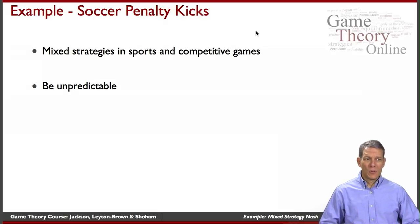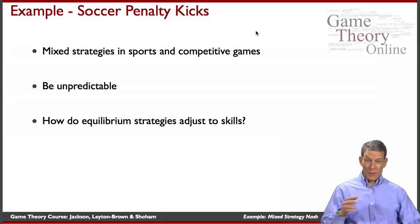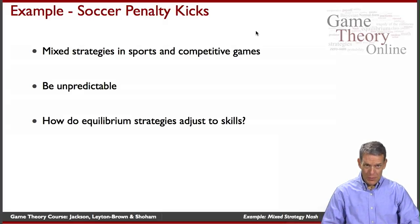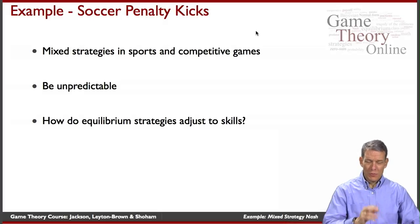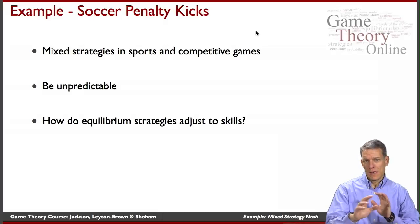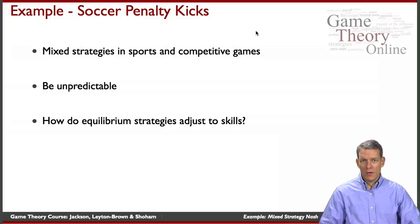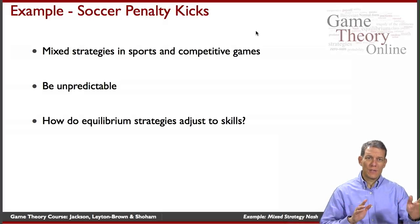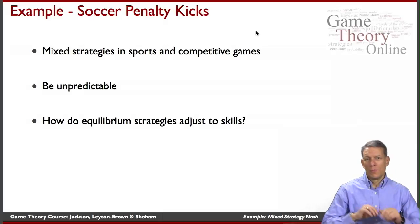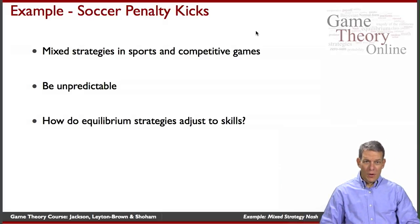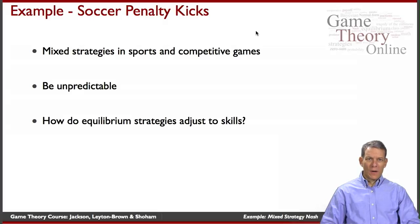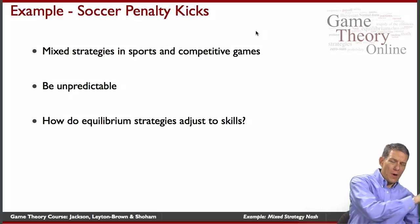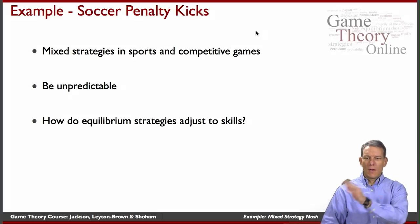By not knowing what the opposition is going to do, it makes it more difficult for you to pick an optimal strategy. In these games where one player wins and the other loses — in soccer penalty kicks specifically — the kicker tries to kick the ball into the goal, the goalie tries to deflect it. This happens very quickly, so it's essentially a simultaneous move game. If the goalie guesses correctly and dives the same direction as the kick, they have a higher chance of saving it; opposite direction, a lower chance.